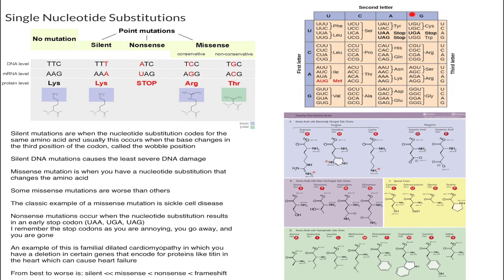The codon table essentially tells you what codon gives you what amino acid. For example, if you have UUU, that will give you phenylalanine. There are 64 different types of codons and 61 of them encode for amino acids. As you can see, there are three stop codons.